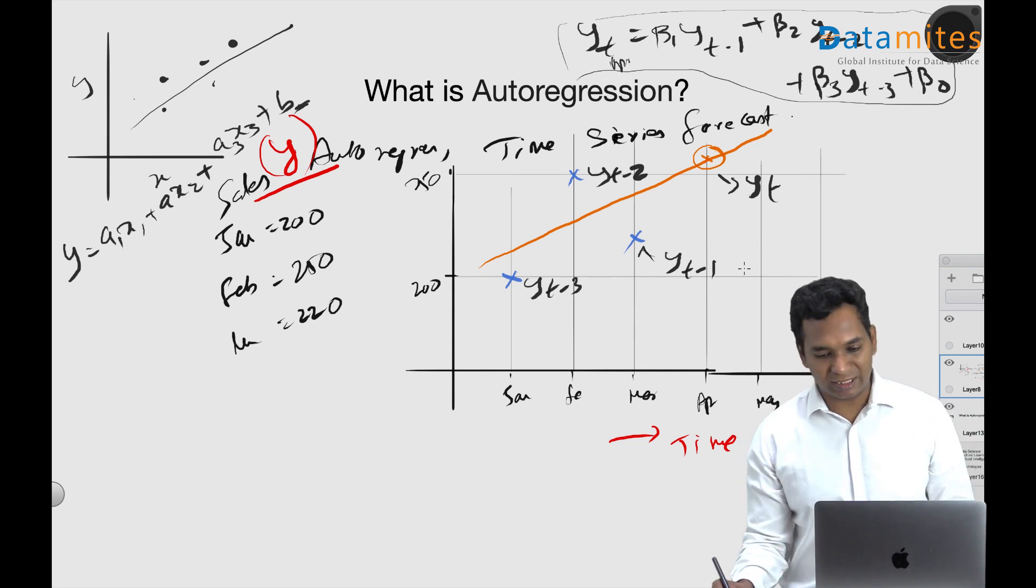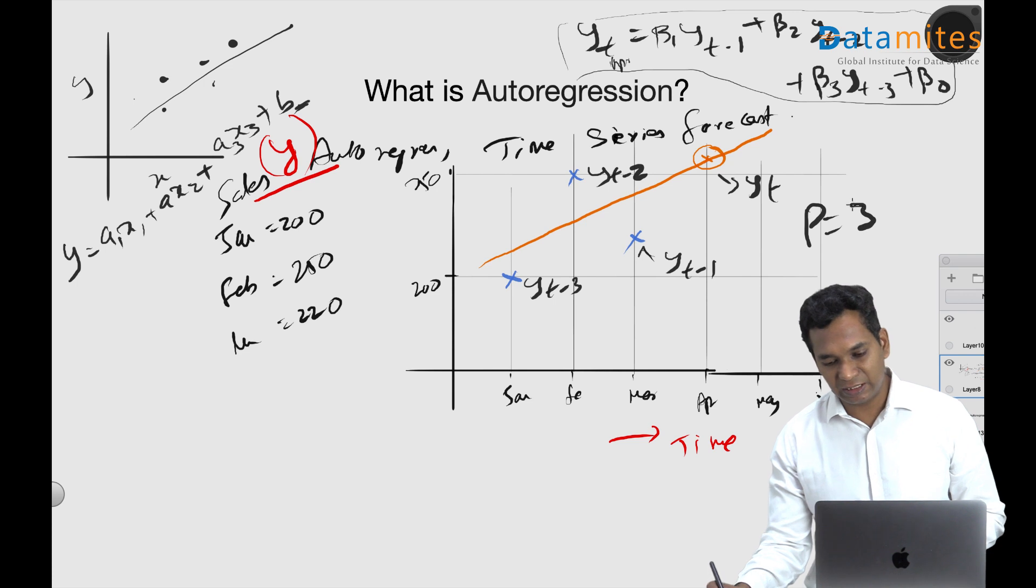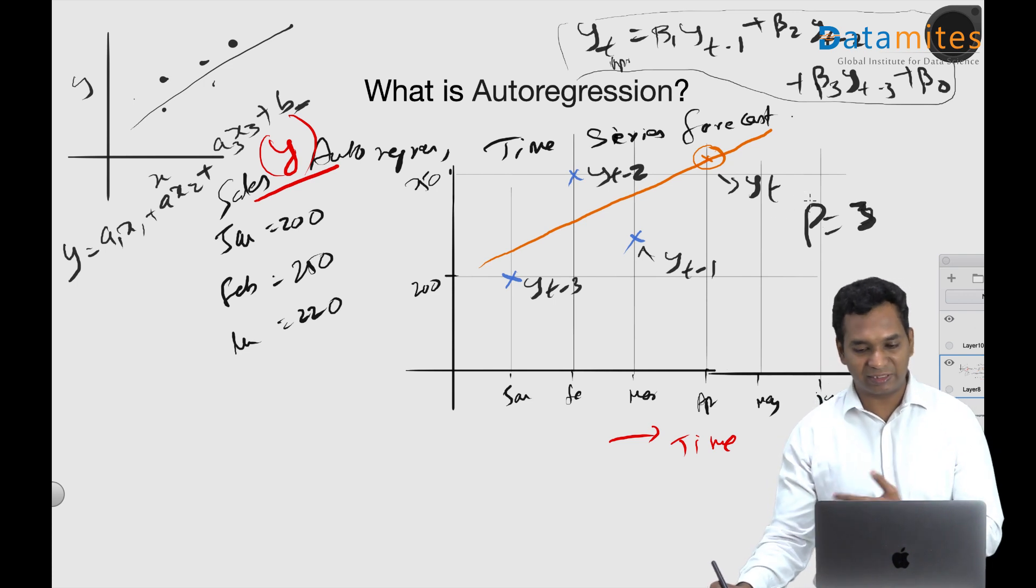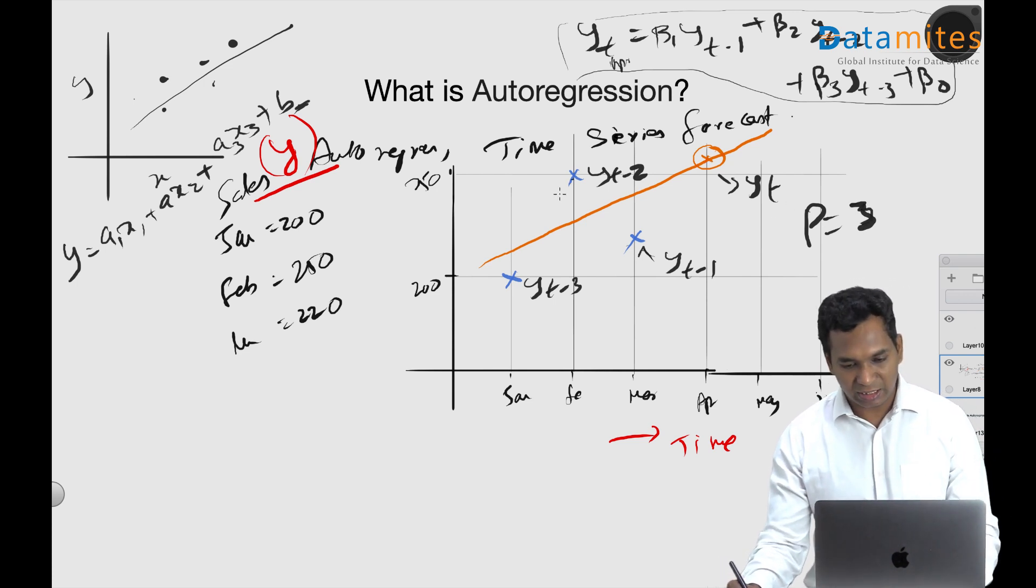I'm taking the time period of 3 in this case, and I'm using this way. So if you want to predict the next one, I'm going to take these three and draw some line like this. And this is the next prediction. Again take these three and then draw something like the next prediction.